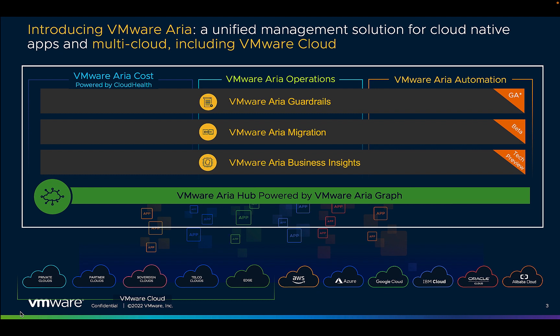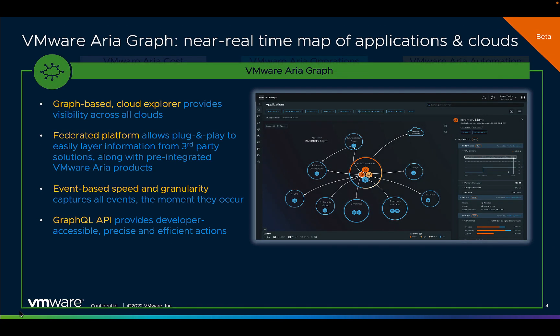VMware ARIA Hub is a game-changing solution for multi-cloud management combining end-to-end multi-cloud management solutions. Under the cover, the platform is powered by VMware ARIA Graph, a cloud-scale graph based on stored technology that provides a real-time map of applications and clouds with management insights.